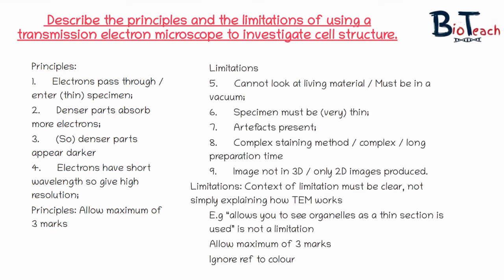Looking at the limitations: with electron microscopes you cannot look at living material, or the material must be in a vacuum, which means it must be dead. The specimen also takes a lot of time to prepare and it has to be very thin. You could also talk about the complex staining method, the long preparation time, and how the image is not in 3D — only 2D images are produced. Another point to mention is artifacts: these are parts of the slide that aren't necessarily part of the cell itself, such as air bubbles or dust that got in when preparing your slide. When looking at things under such high magnification, you do expect some artifacts to be present.